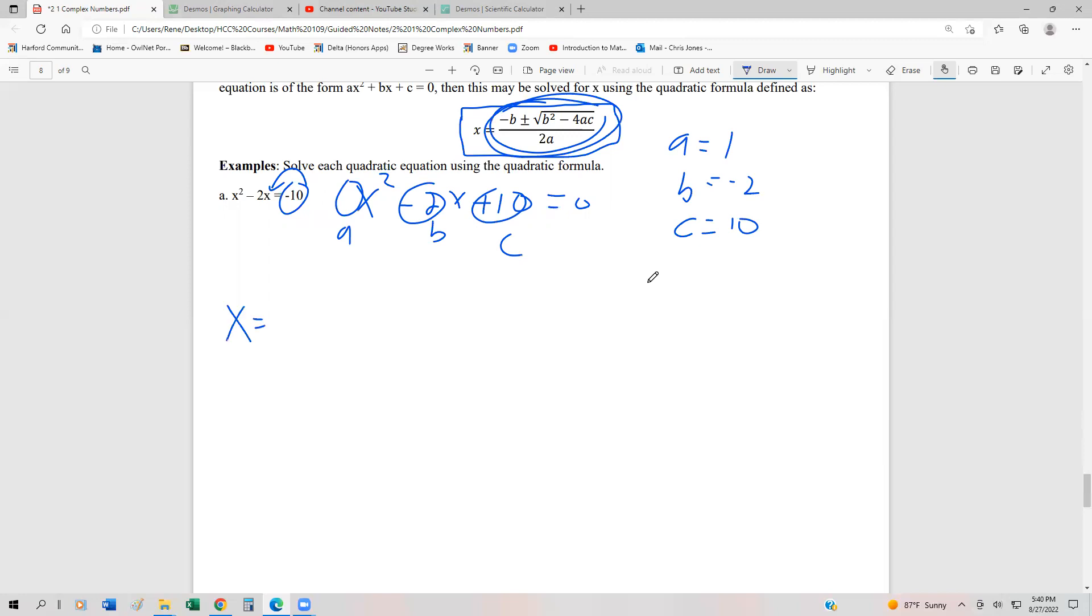We're just going to substitute immediately into the quadratic formula. So x is going to be equal to the opposite of negative 2, so that's negative b, plus or minus the square root of b squared, so that's negative 2 squared, minus 4 times a, which is 1, times c, which is 10. And then we divide that by 2 times 1, or 2a.